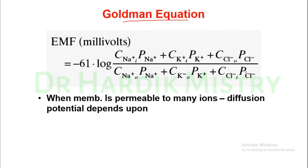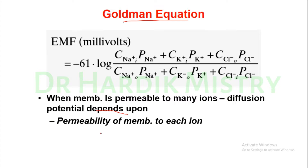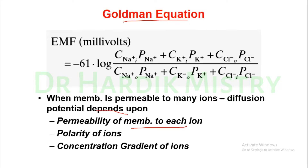When the membrane is permeable to many ions, the diffusion potential depends on three factors: the permeability of the membrane to each ion, the polarity of the ions (whether positive or negative charge), and the concentration gradient of the ions. All three factors affect the membrane potential. The total summated potential of the membrane, found using the Goldman equation, is what we call the membrane potential.